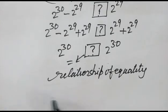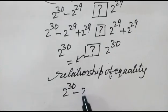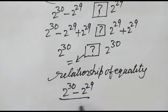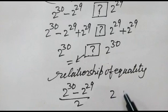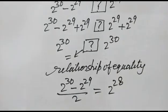So (2 to the power 30 minus 2 to the power 29) over 2 and 2 to the power 28 are equal. Okay friends, thank you.